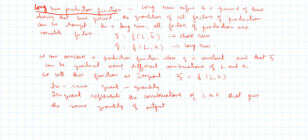The long run production function is represented as Q as a function of L and K, where both are variable. If you want to increase or decrease the quantity of output Q, you can increase or decrease both labor and capital. In the long run, the quantities of all factors of production can be changed — all factors are variable.